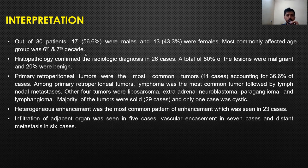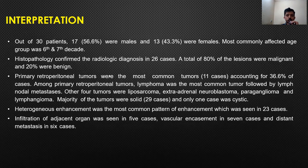Interpreting my study: it includes 30 patients, of which 17 were males and 13 were females. The most common age group was the sixth and seventh decade. It is a pathologically confirmed radiological diagnosis in 26 cases, out of which 80% were malignant and 20% were benign. Among these, primary retroperitoneal tumour was the most common tumour, accounting for 36.6%. Lymphoma was the most common tumour, followed by lymph node metastasis. Other tumours included liposarcoma, extra-adrenal neuroblastoma, paraganglioma, and lymphangioma.